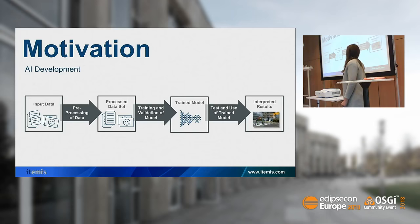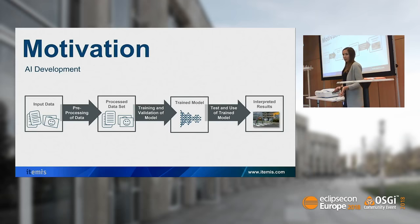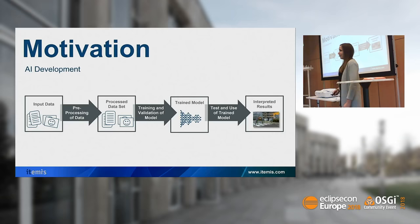With the processed dataset you can start your training. You define a model architecture and train the model, which also generally takes a long time. With the trained model you can then build an application — for example, a face recognition application which can decide who you are. In the automotive domain, you mostly want to put this application onto an embedded controller.